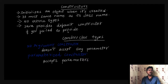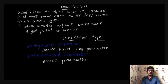Suppose you explicitly provide constructors. There are two types: no-argument constructors and parameterized constructors. No-argument constructors accept empty parameters, while parameterized constructors accept parameters.